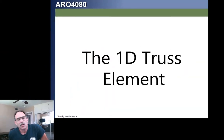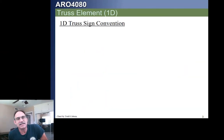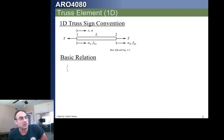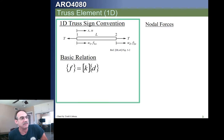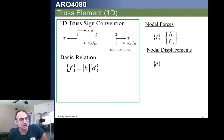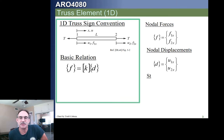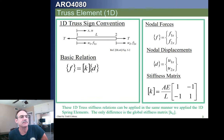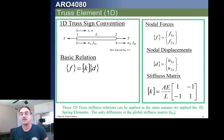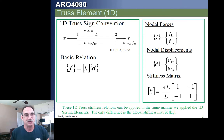We can recall our basic one-dimensional truss element and its sign convention. We have the basic one-dimensional relations that relate our forces — our local forces — to our local displacements using the local stiffness matrix. This should be getting old hat by now. We've done this for one dimension, two dimensions, and now we're going to do it in three dimensions.